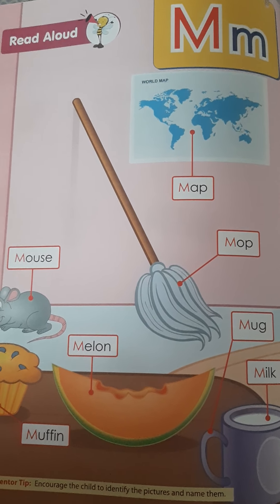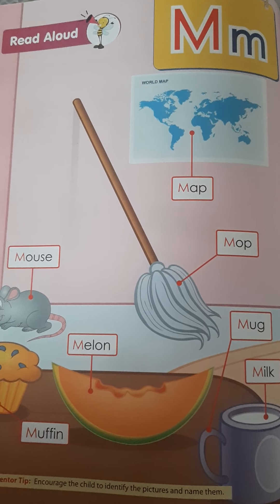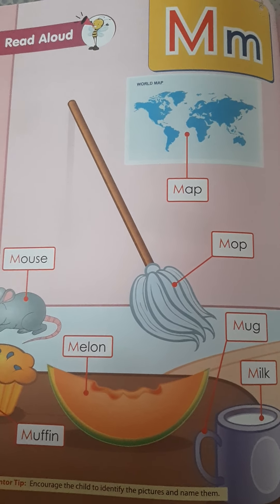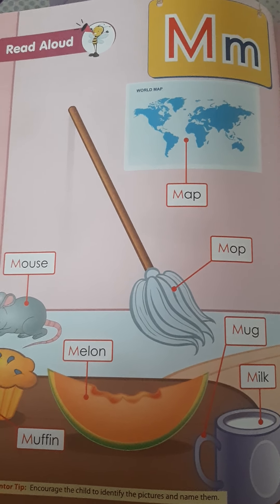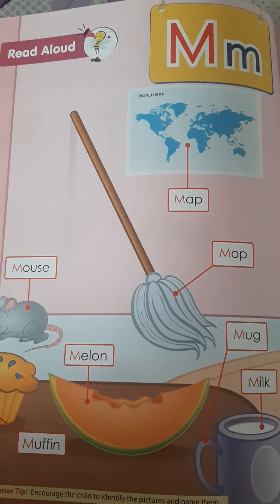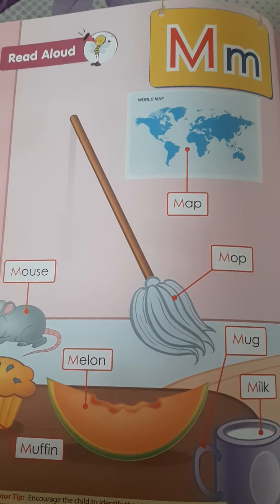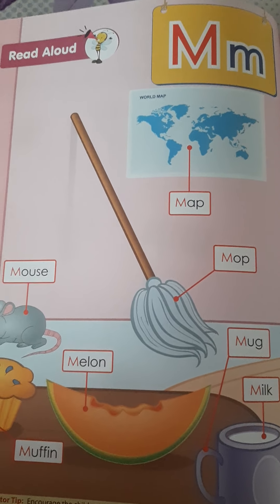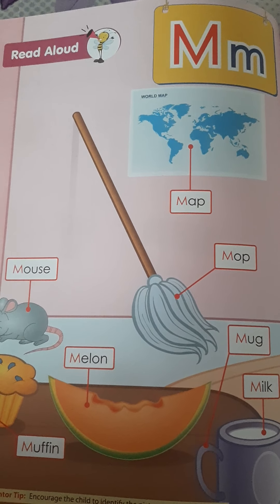P — popcorn. Q — quill. R — rabbit. S — snake. T — table. U — umbrella. V — violin. W — wall. X — Xmas tree. Y. Z — zebra.